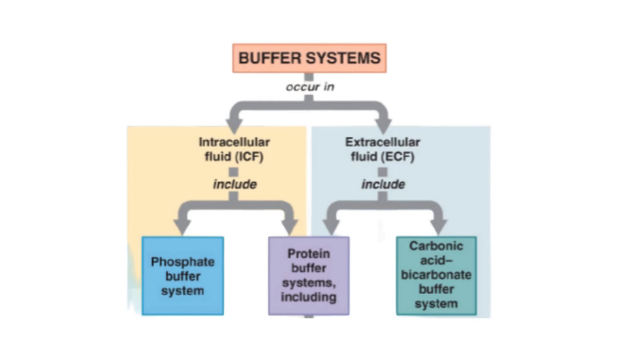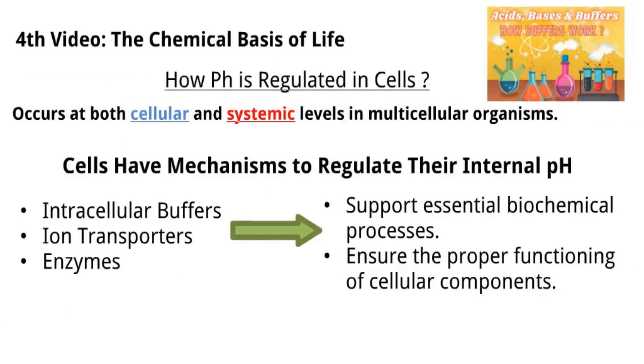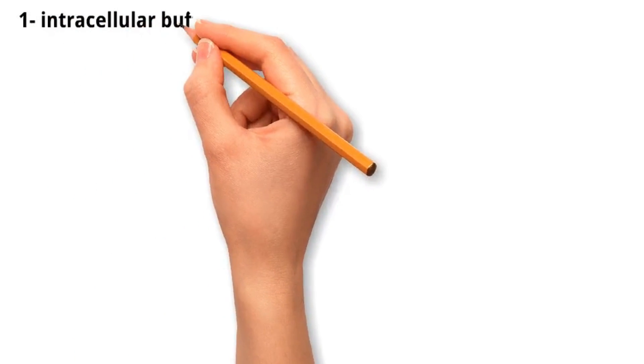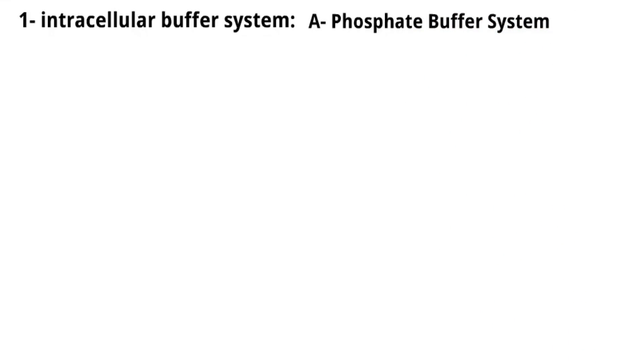Cellular pH regulation occurs through different mechanisms. The first mechanism is the intracellular buffer system — for example, the phosphate buffer system. The phosphate buffer system plays a vital role in preventing large swings in pH within cells, ensuring that the internal environment remains within an optimal pH range for cellular processes.